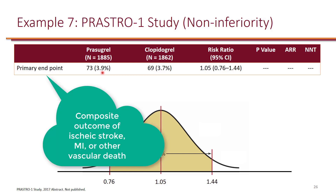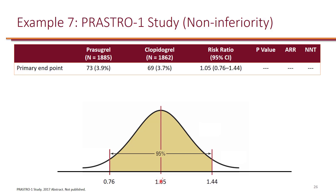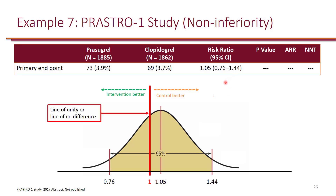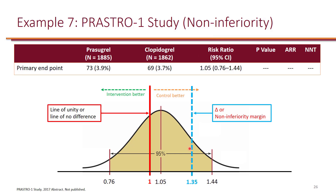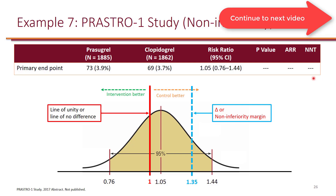The last example is the comparison of prasugrel to clopidogrel. The primary endpoint was a composite outcome of ischemic stroke, MI, or other vascular death. They showed a risk ratio of 1.05, with a confidence interval of 0.76 to 1.44. It definitely crossed the line of unity, so it failed superiority. This is a non-inferiority study with the margin set at 1.35. The confidence interval crossed 1.35, so not only did it fail superiority, but it also failed non-inferiority. You can conclude that prasugrel is not non-inferior to clopidogrel for this primary endpoint.